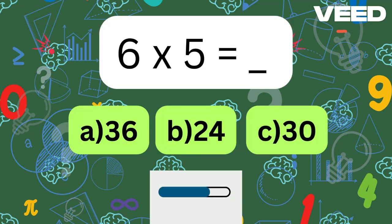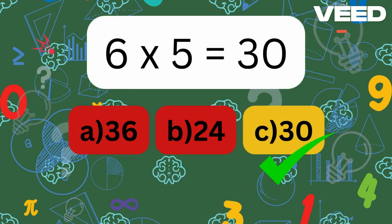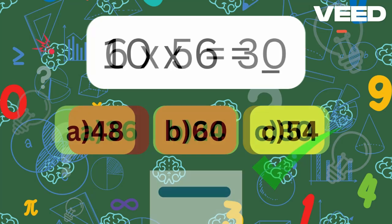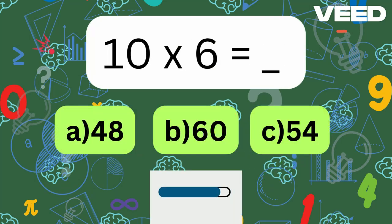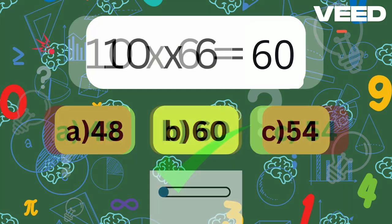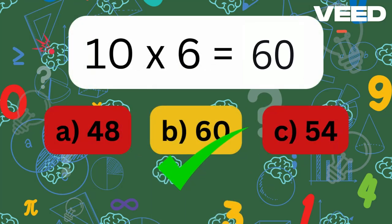6 times 5 is? 6 times 5 is equal to 30. 10 times 6 is? 10 times 6 is equal to 60.